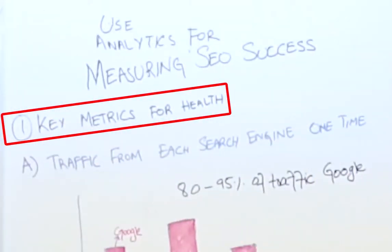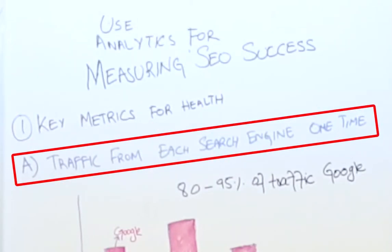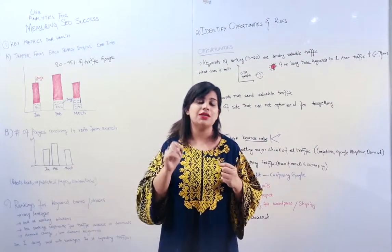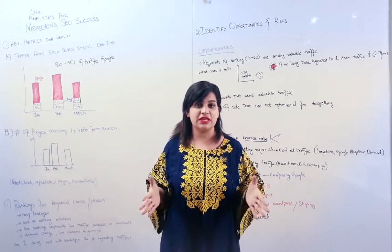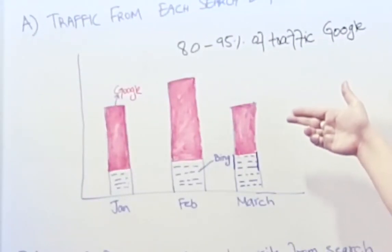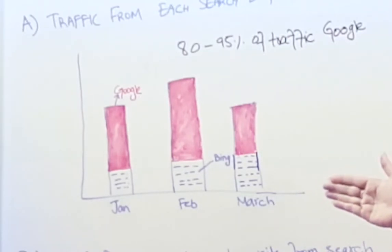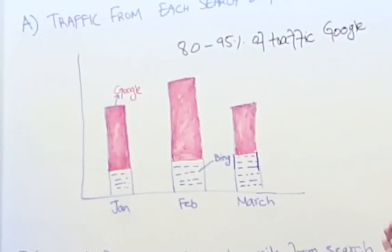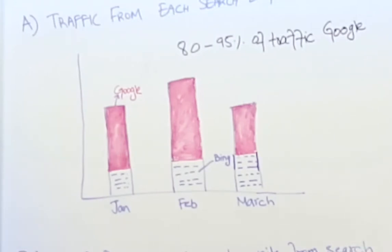Number one: we look at key metrics for health — traffic from each search engine over time. How much traffic was received from each search engine in the past? Looking at this graph, the red represents Google and blue dots represent Bing. We can see that Google traffic increased from January to February, but decreased from February to March. Bing, on the other hand, increased from January through March. Google usually accounts for 80 to 95% of traffic for every website.